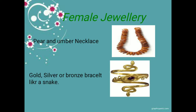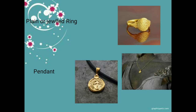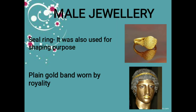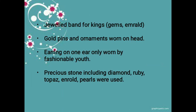Next is jewelry. Women's jewelry included plain amber necklaces, gold, silver, and bronze bracelets in snake shapes — both plain and jeweled — ring pendants, and engraved earrings. Men's jewelry included seal rings, plain gold bands, and gems such as emeralds and precious stones. Fashionable youths also wore earrings.